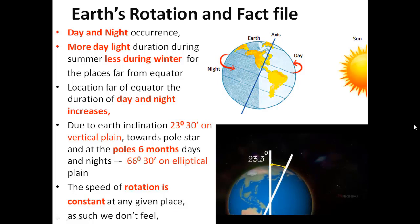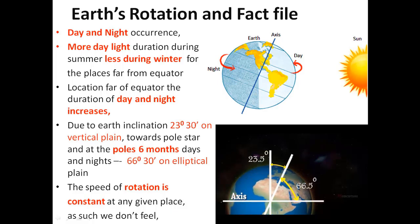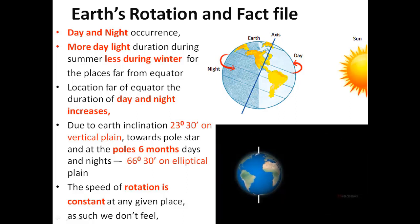It takes 24 hours to complete one rotation on its axis. Due to Earth's inclination of 23 degrees 30 minutes on the vertical plane toward the Pole Star, at the poles there are 6 months of day and 6 months of night. This is due to the inclination of 66 degrees 30 minutes on the elliptical plane.